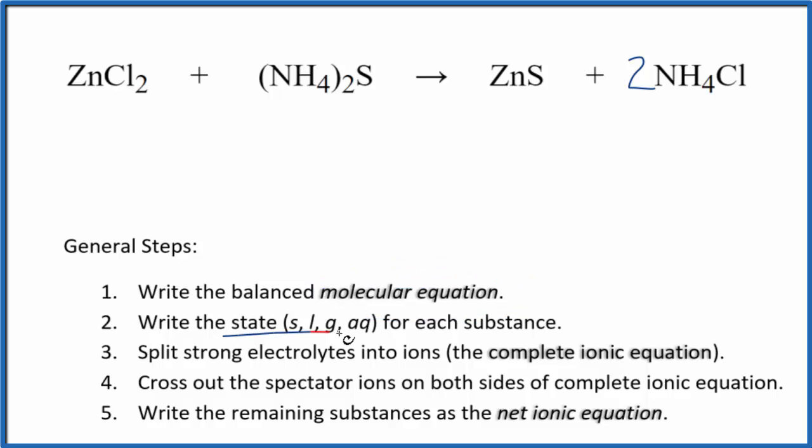Now we can write the state for each substance. If you know your solubility rules, chlorides are very soluble, so aqueous. This will dissolve and dissociate into its ions. Ammonium compounds are very soluble, aqueous as well. But sulfides in general are insoluble. Zinc sulfide is insoluble. These two substances react and produce the zinc sulfide, which is insoluble. So it's a solid, doesn't dissolve, falls to the bottom of the test tube as a precipitate. So we have our precipitate here, and this is a precipitation reaction. Ammonium compounds and chlorides are very soluble, aqueous.